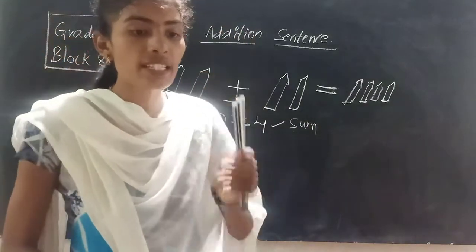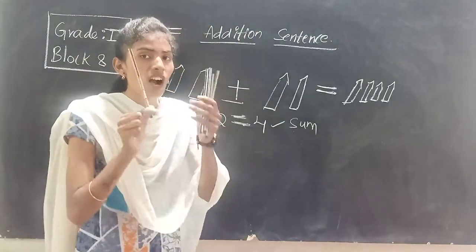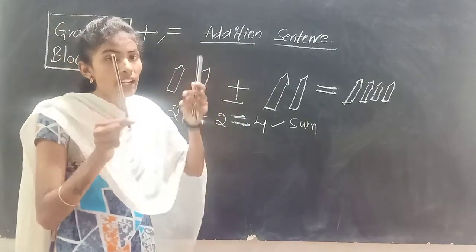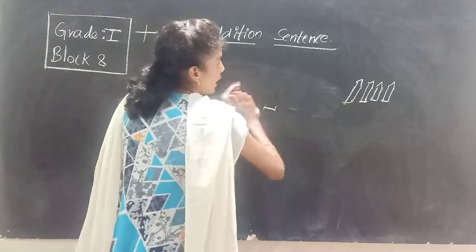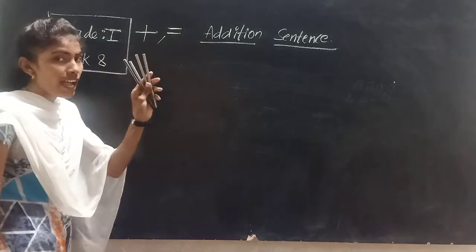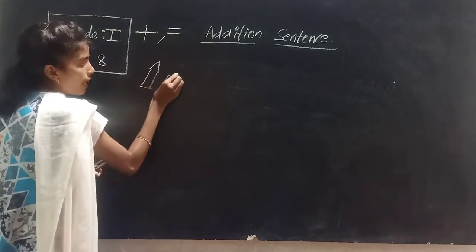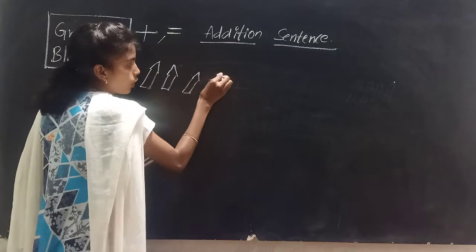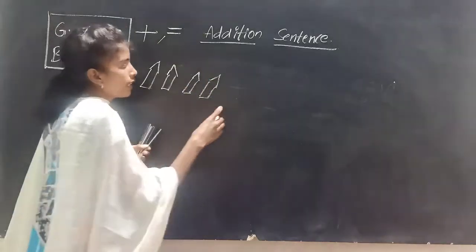For example, I have four pencils in my left hand and one pencil in my right hand. Now how can you represent these numbers as an addition sentence? Like this we draw the picture — four pencils in my left hand, and one more pencil in my right hand.